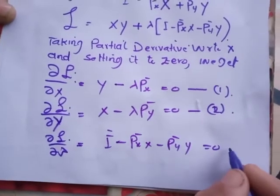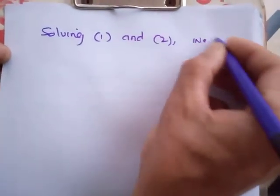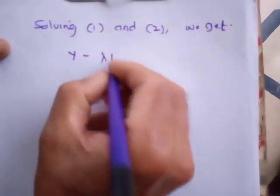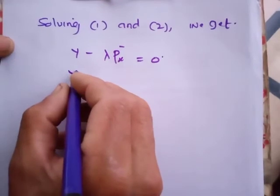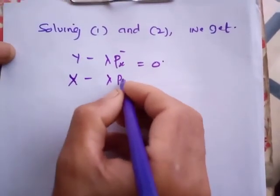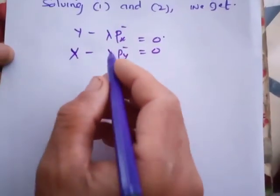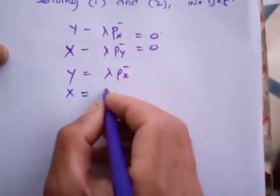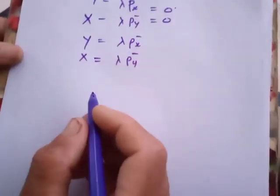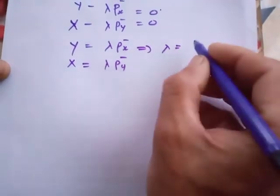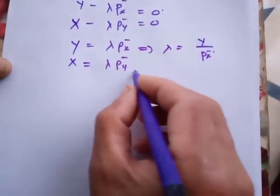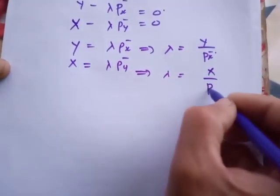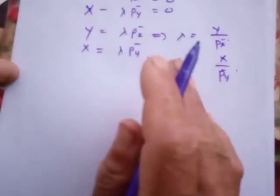Solving equations 1 and 2, we get: y minus lambda Px equal to 0, and x minus lambda Py equal to 0, which can be written as y equal to lambda Px and x is equal to lambda Py. Here lambda is equal to y divided by Px, and here lambda is equal to x divided by Py. So both right hand terms are equal to lambda.